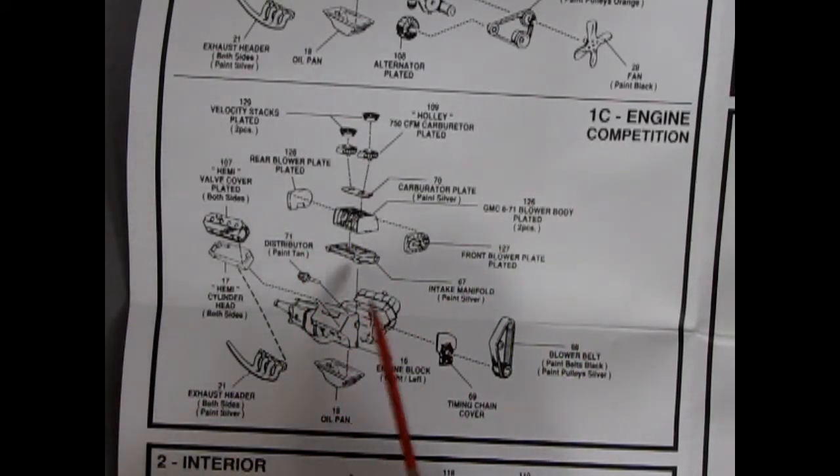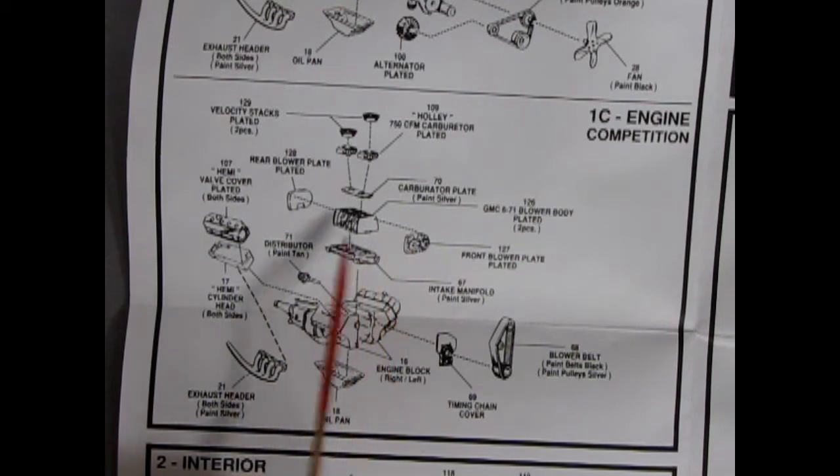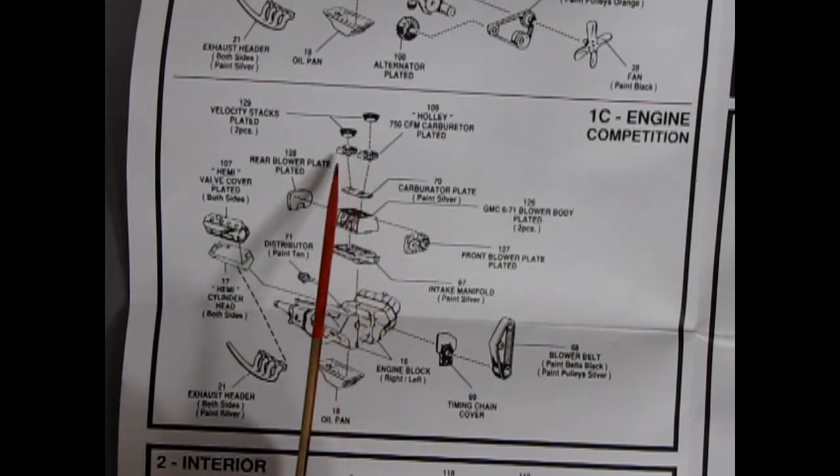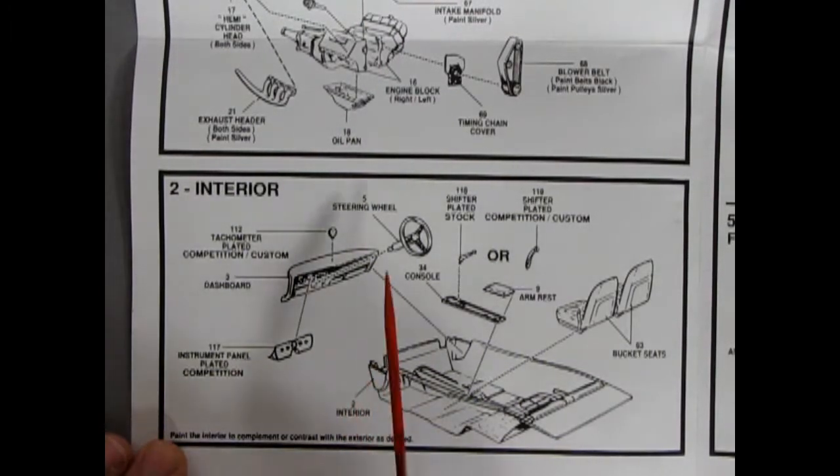Our final engine choice is the competition engine. This one is just slightly different. We have the bottom of the engine going together the same as the stock with the exception of a chrome timing chain cover and blower belts going up to our chrome plated blower. You got a front cover, the center section, the rear blower plate cover, carburetor plate, your dual Holleys and then your velocity stacks as well.